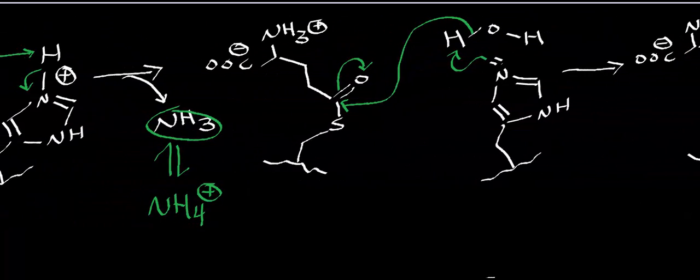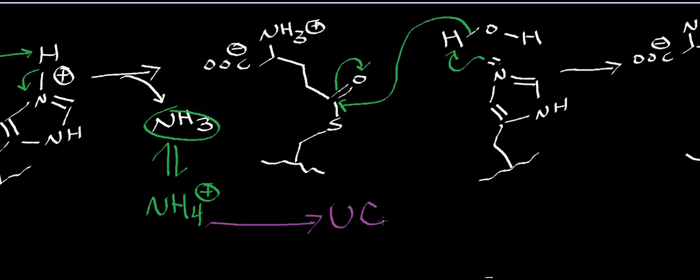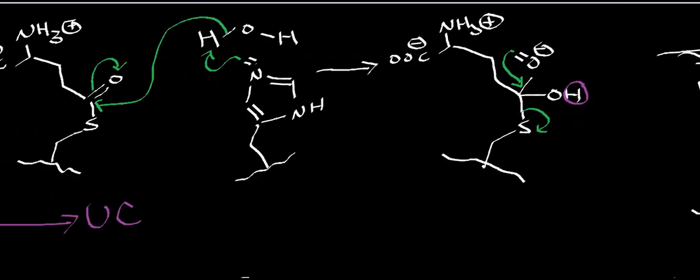The ammonia produced in this step is then going to go into the urea cycle, where it's specifically activated by carbamoyl phosphate synthetase one. That allows it to be put into the urea cycle and excreted as urea by the nephron.